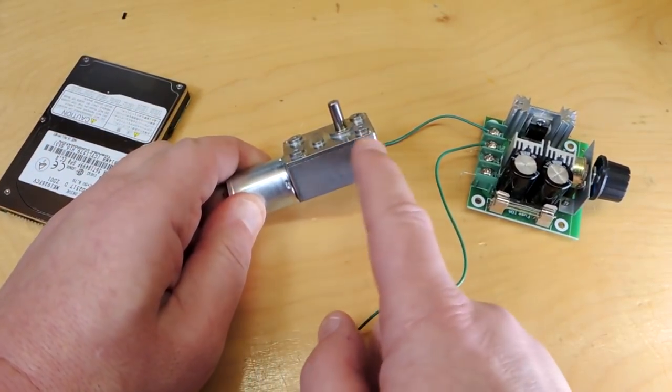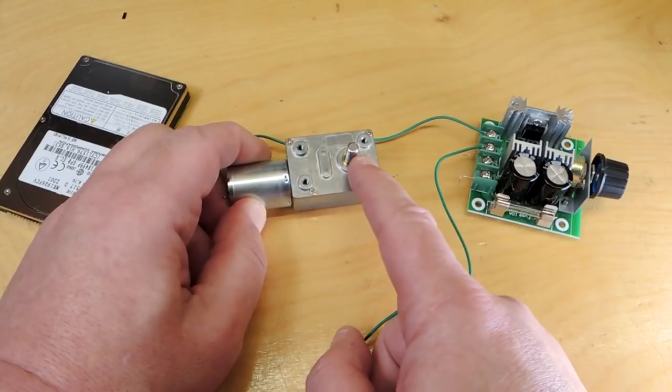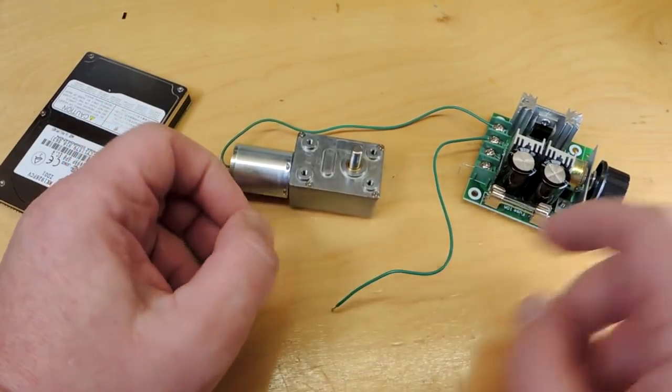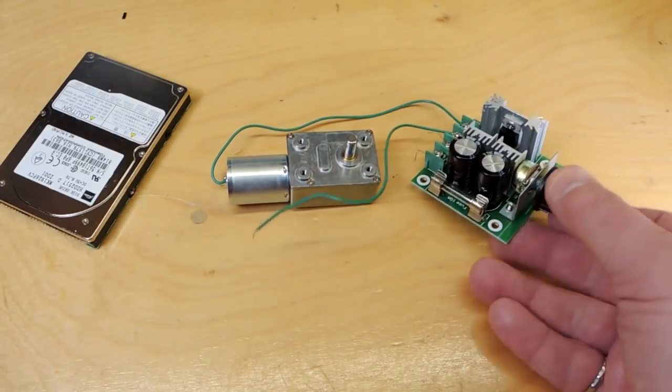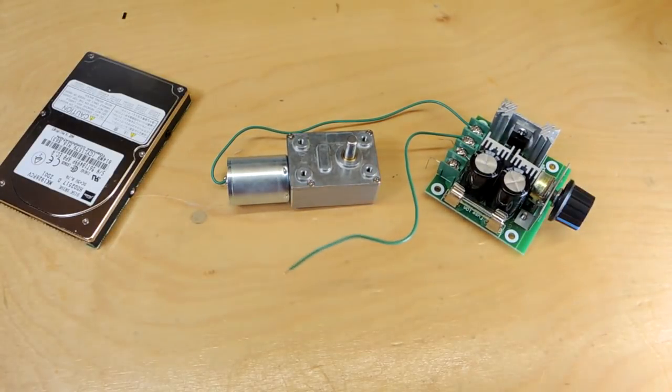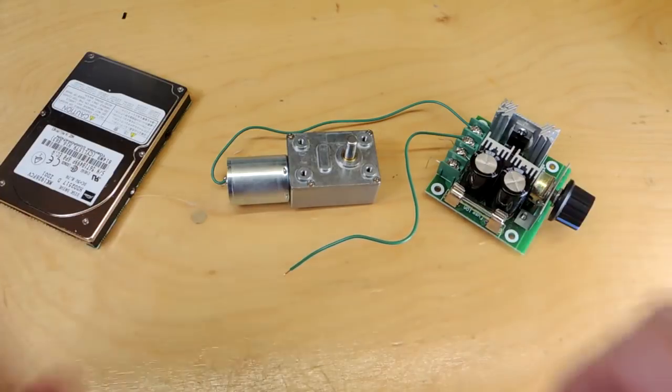It has a DC motor here with a gearing box which drops it down to 5 rpm when you supply it with 12 volts. For this project, 5 rpm might be too fast, so this is a motor control. Let's build a semiconductor lapping machine with these bits.